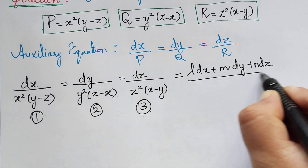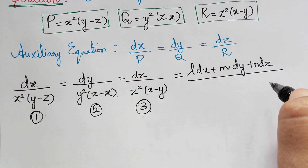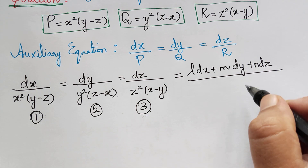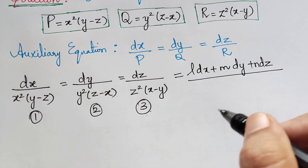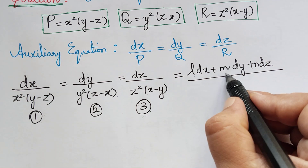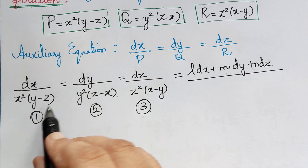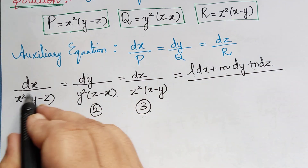I have explained how to form the fourth ratio in my previous video lecture, so kindly go through it before listening to this problem. The same multipliers have to be used with the denominator also.